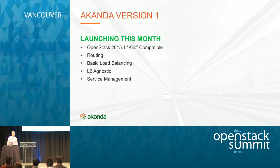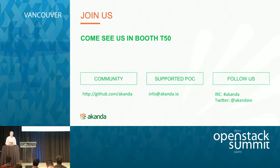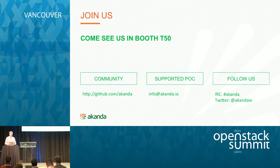The key features to recap: it's 100% compatible with Kilo and runs with a vanilla Kilo installation — basic routing, basic load balancing, service management, and layer 2 agnostic. Down the road, we're going to add extra features through the summer. Join us — it's all open source at github.com/aconda. We have IRC channels, and if you want more information on POCs or testing, reach us at info@aconda.io, or find us at our booth at T50. Thank you very much.